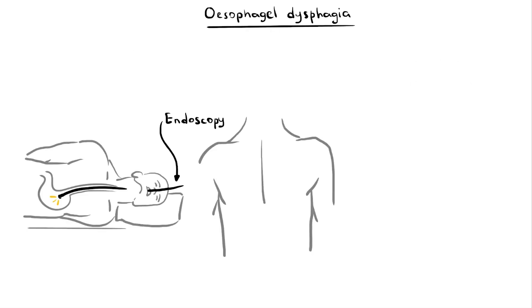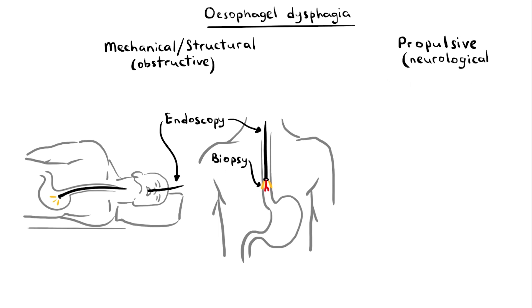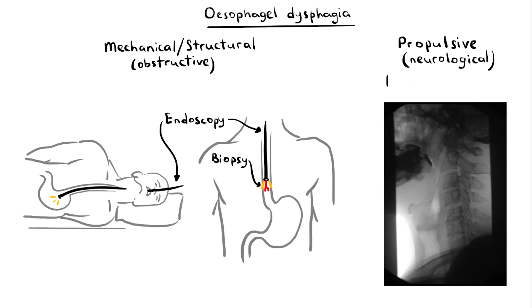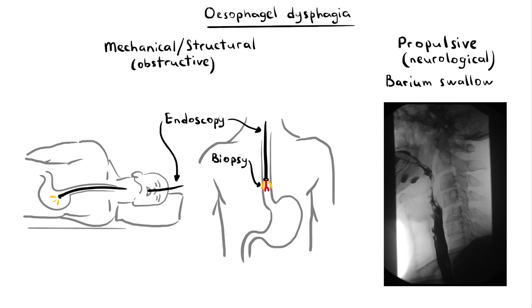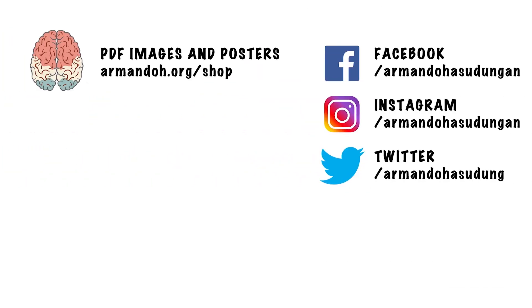For esophageal dysphagia, an endoscopy or biopsy should be performed if a mechanical structural pathology is suspected. However, if a neurological cause is suspected, a barium swallow study can be done. I hope you enjoyed this video on dysphagia. Thank you for watching.